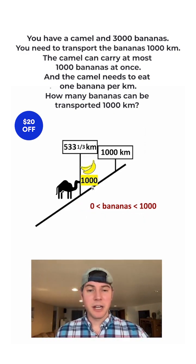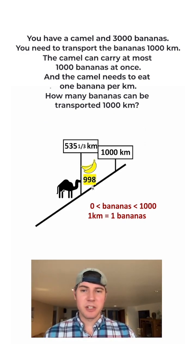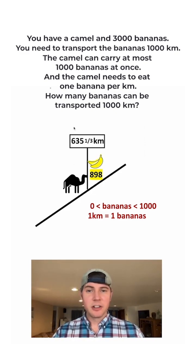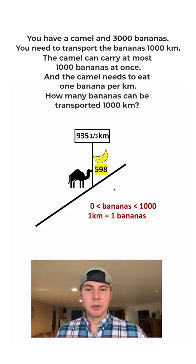So we know that anywhere from zero to 1,000 bananas, it's just one banana per kilometer. So we're just going to start eating bananas as he travels the rest of the way. Let's take 100-kilometer jumps. If he travels 100 kilometers, he's going to eat 100 bananas. And another 100 kilometers, another 100 bananas eaten. He's going to keep doing that until he gets here.